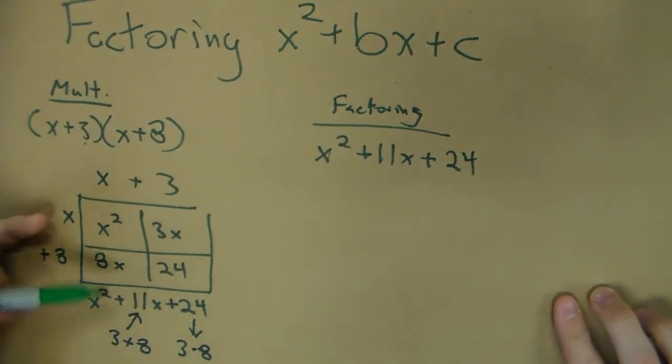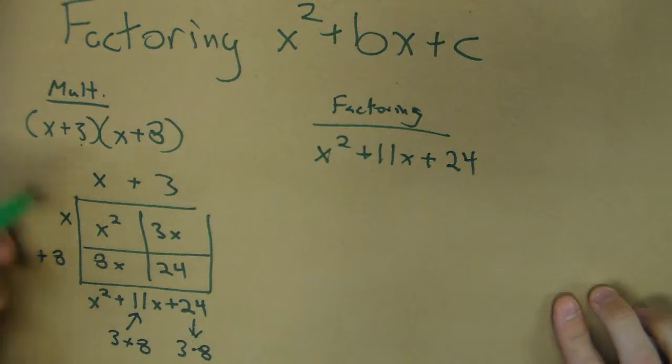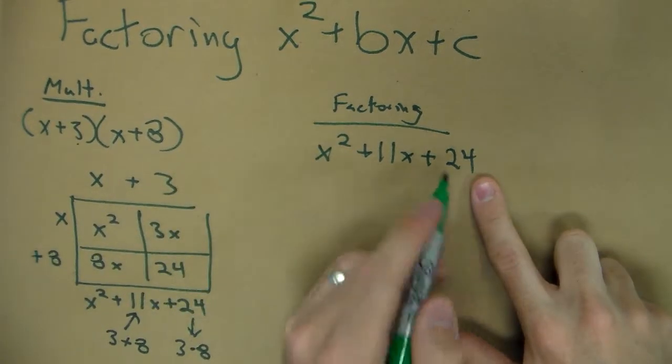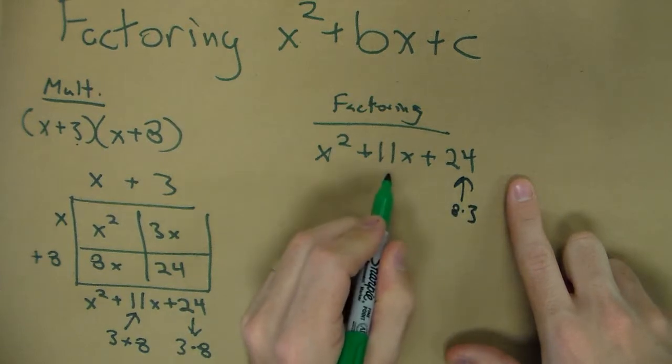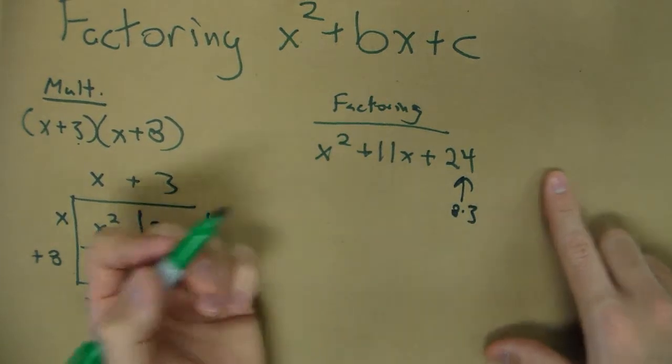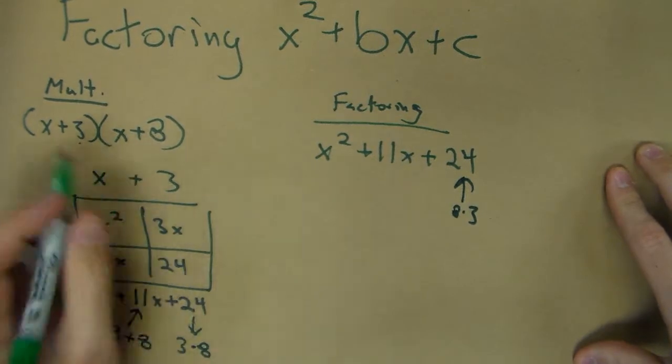The significance of the 11, if I look at the 3 and 8, that is 3 plus 8. So really we could work backwards from a trinomial to figure out what its factors are by looking at the second term being the sum and the product being the last term. So 24 is 8 times 3, and 8 plus 3 is 11.